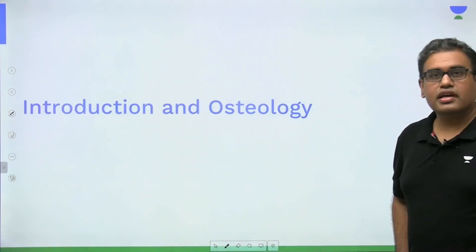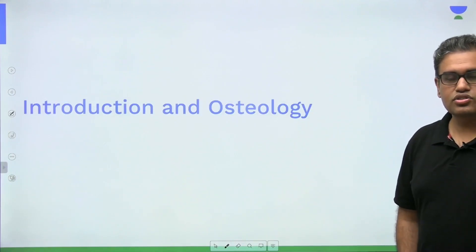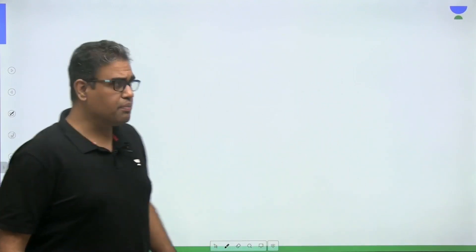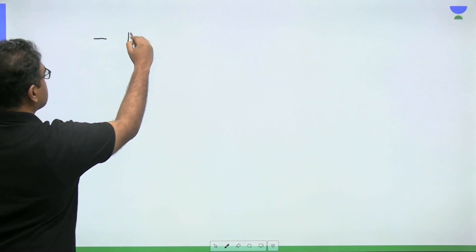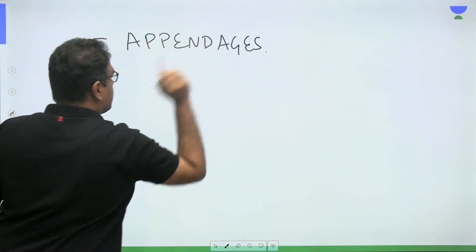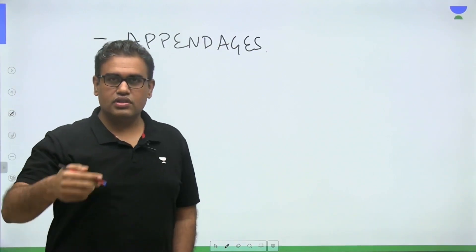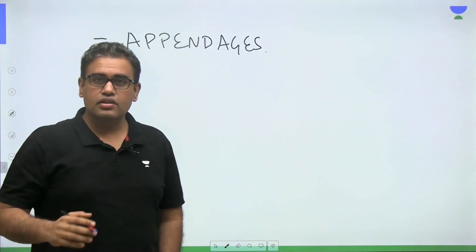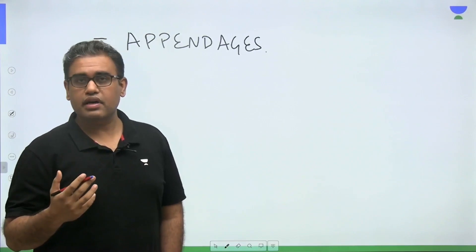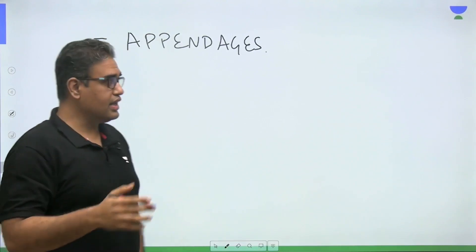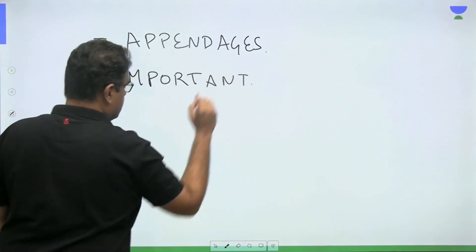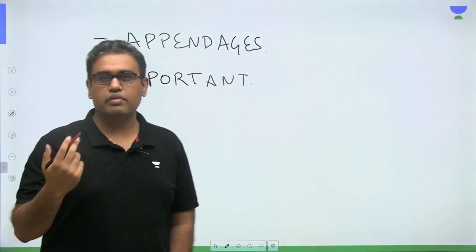Let us start with the osteology introduction. Upper limb — we all should know what the upper limb is meant for. Upper limbs are actually appendages from the body. The upper limb is very important for doing day-to-day activities. Upper limbs are important for life and living, but they are not essential — meaning if someone has no upper limb, he can still live. The basic function of the upper limb is movement, to do any work in day-to-day activity.